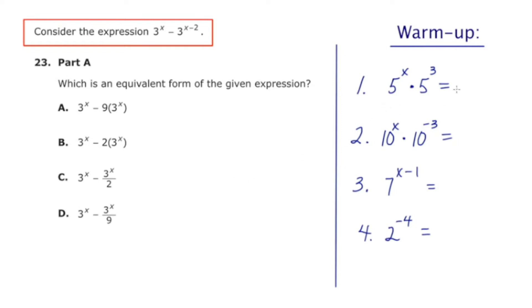So our base is 5, and our exponents are x and 3, and we're supposed to add them together. So I end up getting x plus 3 as my exponent.